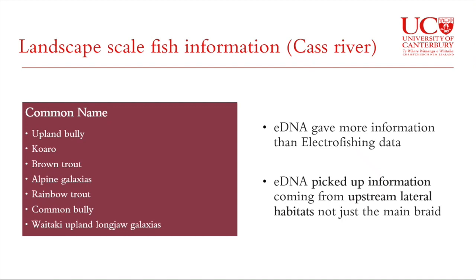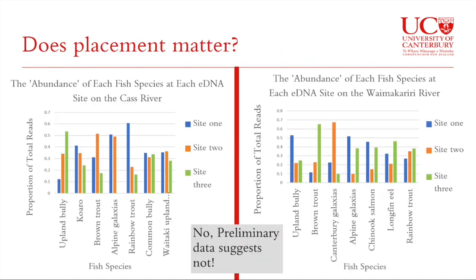Those three species are probably coming from much further upstream — for example, the waitaki upland longjaw is usually found at the springhead, about five kilometres upstream from these eDNA samples. Regarding filter placement: we placed eDNA filters at three sites along the main braid, and for the most part every single site picked up every single fish species, suggesting no spatial pattern — it's consistently detecting species. For the upland bully, even with just one site it would have been detected regardless of filter location. The only exception was the alpine galaxias on the Cass. Preliminary data therefore suggests that where you place your filters does not matter.